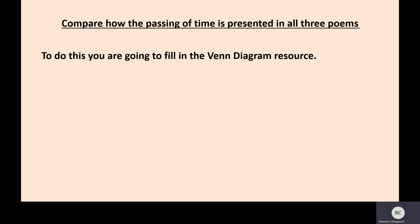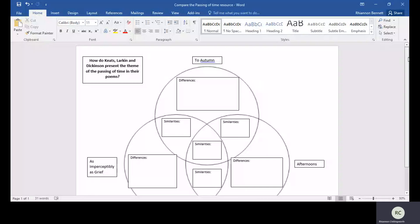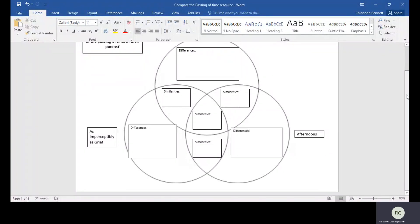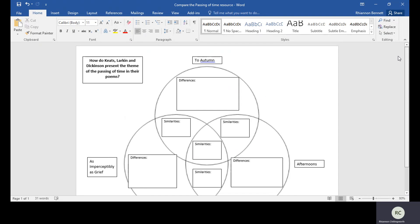I'm going to switch over now to show you the document that is attached to your Teams assignment that I want you to fill in today. You are going to be comparing how the passing of time is presented in all three poems by filling in a triple Venn diagram. This is the Venn diagram that I have prepared for you — this is what you have attached to your Teams assignment.